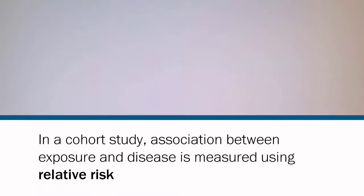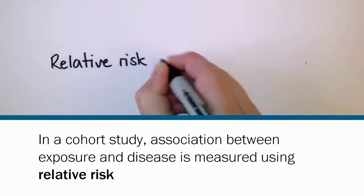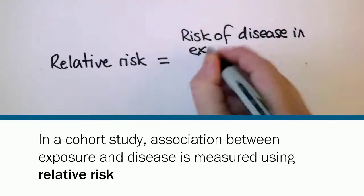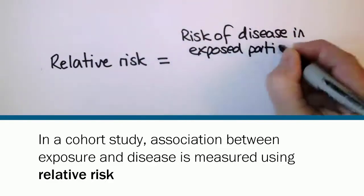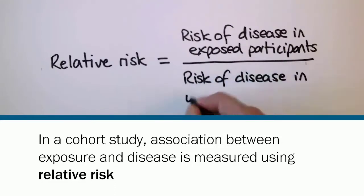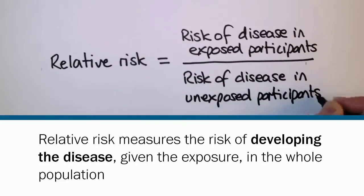In a cohort study, the association between exposure and disease is measured using the relative risk. Remember that in a cohort study, we start with a population that is disease-free. Thus the relative risk measures the risk of developing the disease, given the exposure, in the whole population.